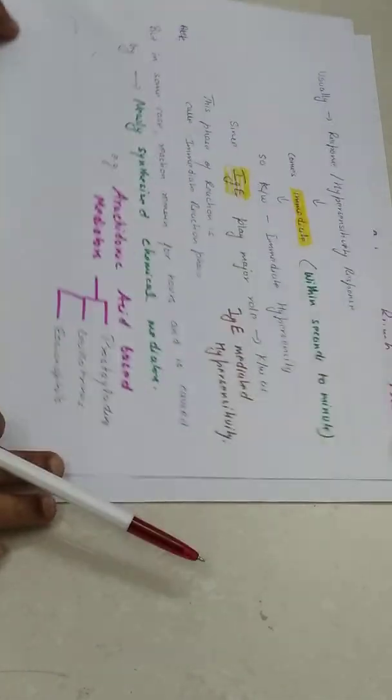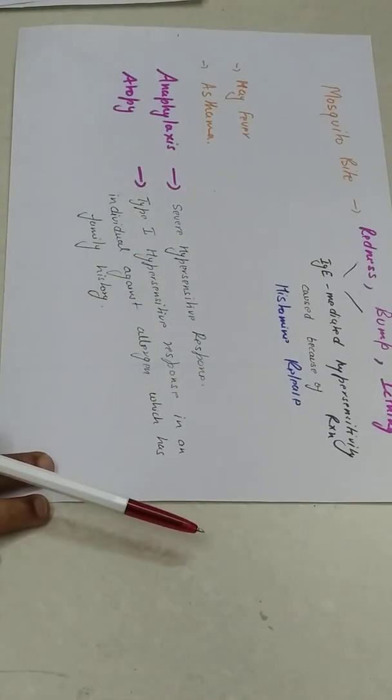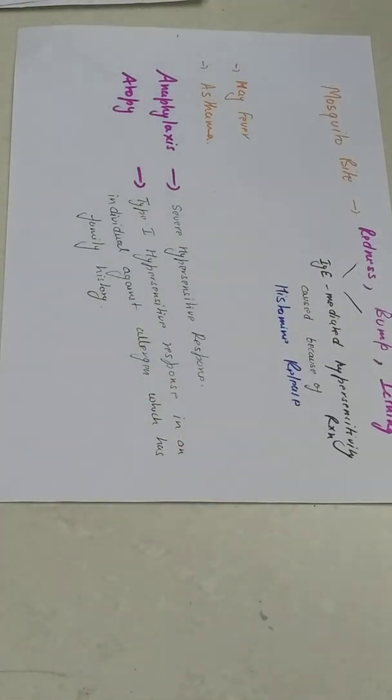If I take an example of mosquito bite, what happens? When mosquito bites, the area is red. There is a redness in the area. There is a bump in the area. And there is an itching. That all is because of IgE mediated hypersensitivity reaction. And that is all because of histamine release.